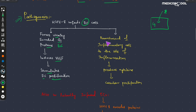Another mechanism is that when the virus infects the endothelial cells, inflammation occurs. In this inflammation, recruitment of inflammatory cells to the site of inflammation occurs. These inflammatory cells in turn produce cytokines, and these cytokines cause cellular proliferation of the endothelial cells, thus producing Kaposi sarcoma.